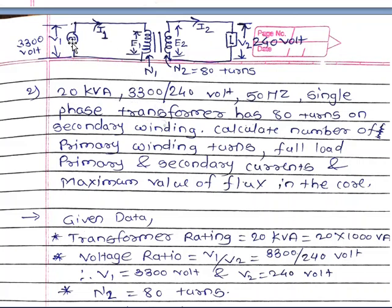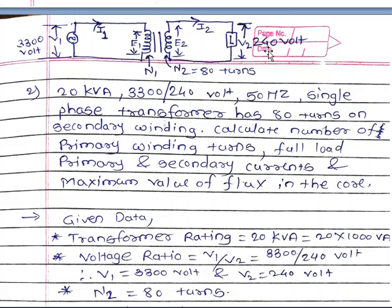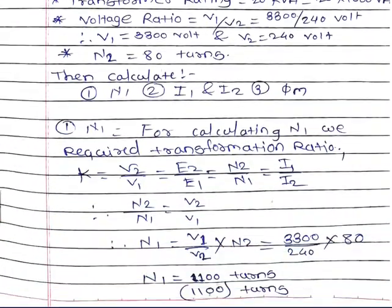The supply voltage given to the primary winding is V1 equal to 3300 volts. The current through the primary winding is I1, the primary current. The self-induced EMF in the primary winding is E1, and the mutual induced EMF in the secondary winding is E2. The current through the secondary winding is I2 and the voltage across the load is V2 equal to 240 volts, with N2 equal to 80 turns. Now we calculate the value of φM, which is the flux cut by both primary and secondary windings.